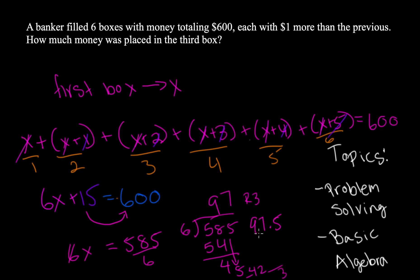And once you have this, you can go ahead and say, okay, 97.5 equals x. But that's not our final answer because they're asking what box number 3 is. And we know that box number 3 is x plus 2.